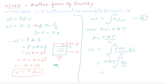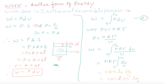Integrating dV/V from V1 to V2, we get the natural log: W = nRT × ln(V2/V1). Converting natural log to common log, we multiply by 2.303, giving W = 2.303 nRT log(V2/V1).